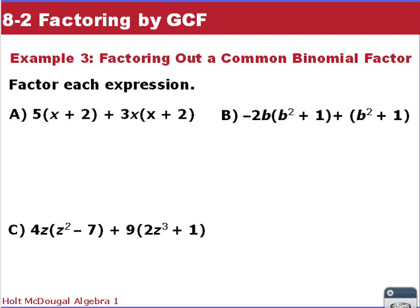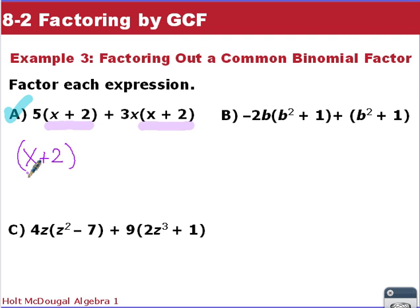For example A, we have 5(x + 2) + 3x(x + 2). Both terms share the binomial factor (x + 2), so we factor it out: (x + 2)(5 + 3x). You can check your work by distributing back — it gets a bit messier but is highly recommended.